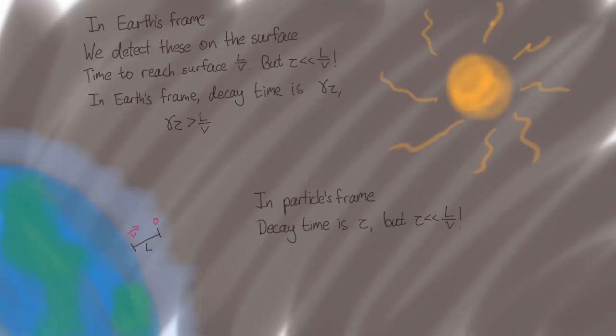So this is a paradox, right? How can someone on the earth think that the muon is going to make it to the surface, whereas the muon thinks that it's going to decay long before passing through the atmosphere?